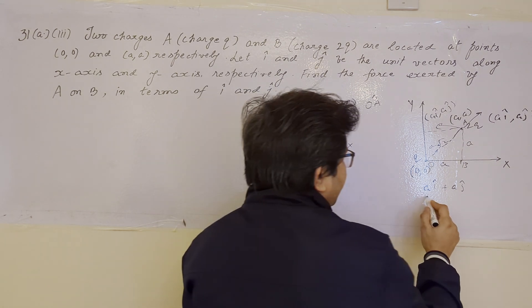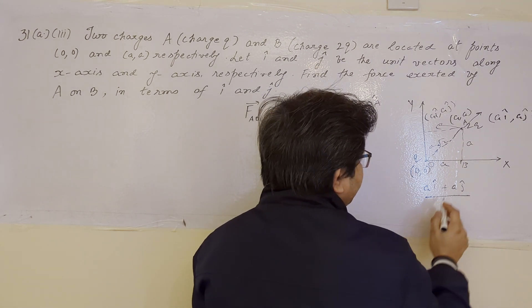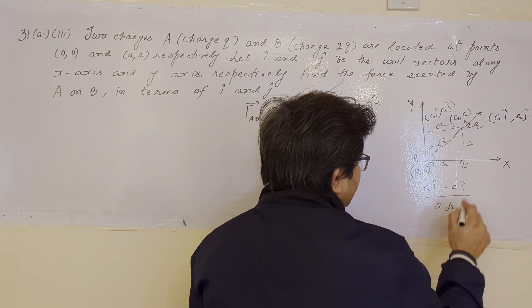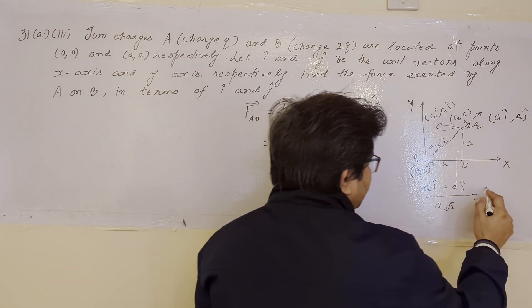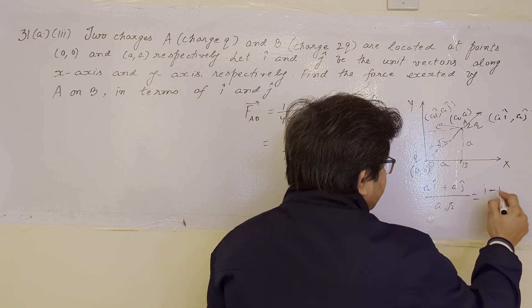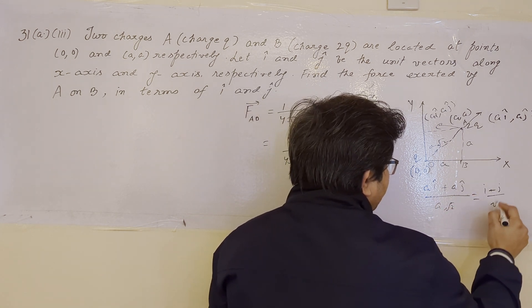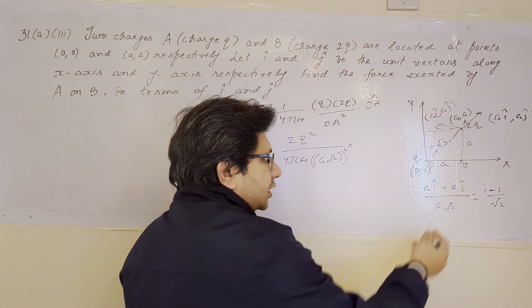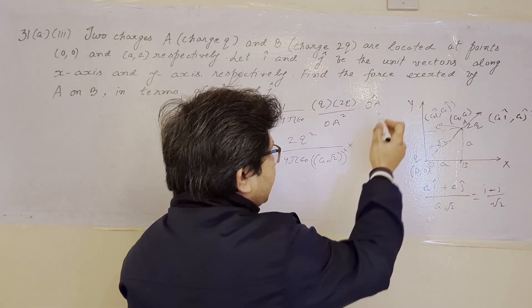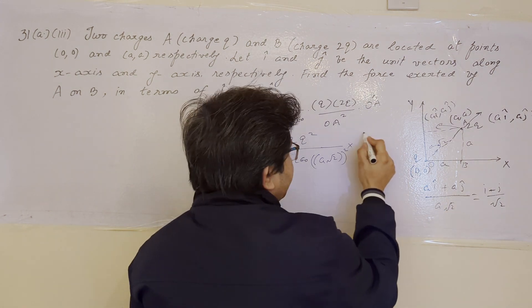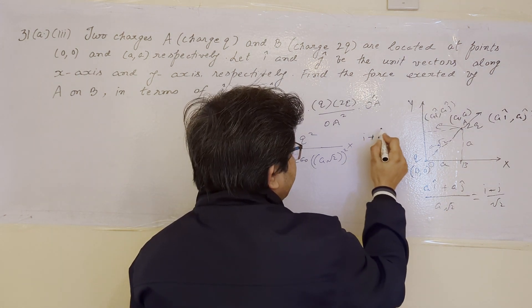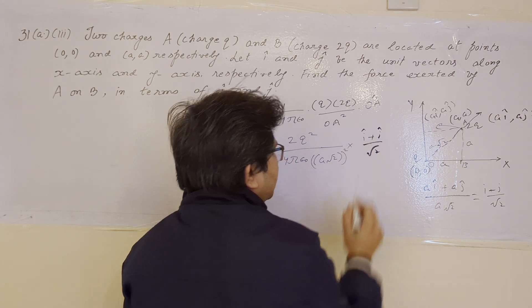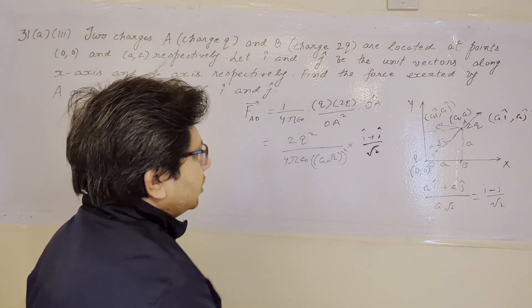Dividing by the magnitude a√2, the factor 'a' cancels, giving unit vector OA cap = (î + ĵ)/√2. This is the unit vector OA cap.